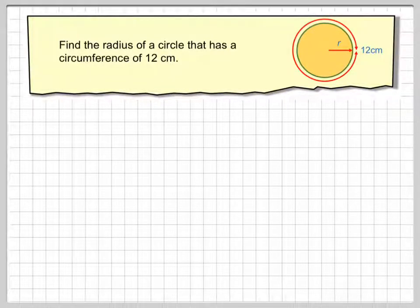In this video, given the circumference of a circle, we're being asked to find the radius of the circle. Find the radius of a circle that has a circumference of 12 centimetres.